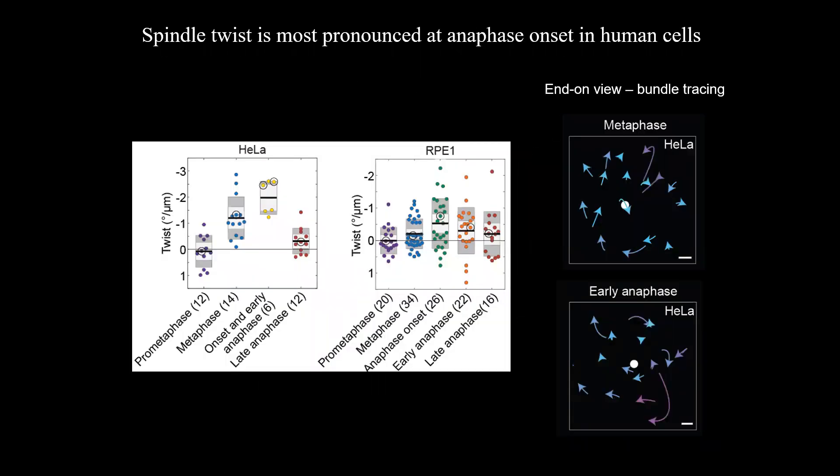Now we show that spindles are most chiral near the metaphase-to-anaphase transition. Spindles are born without twists. The left-handed twist in HeLa cells arises as the spindle acquires its metaphase shape, peaks at the start of the chromosome segregation, and declines afterwards. In RPE1 cells, the twist shows a similar trend, but the values are much less pronounced and the twist is mostly noticeable only in early anaphase.